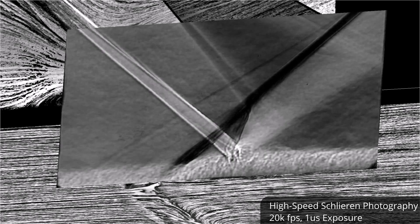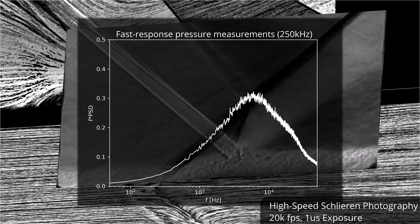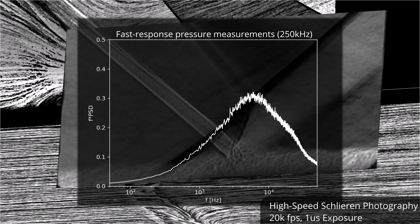Further downstream, the shear layer between the separation bubble and the free stream acts as another source of unsteadiness with a frequency peak around 10 kHz.